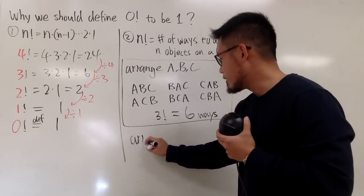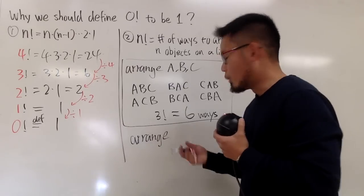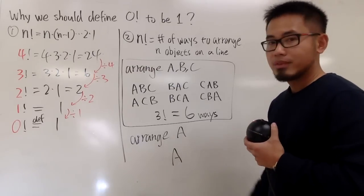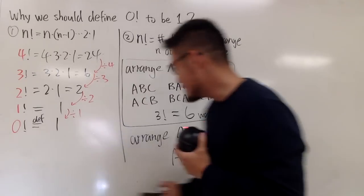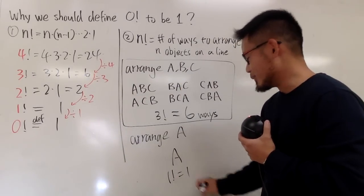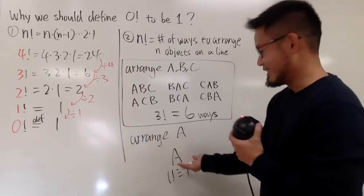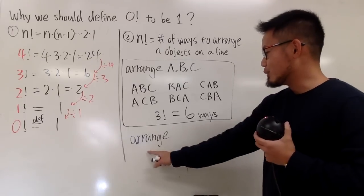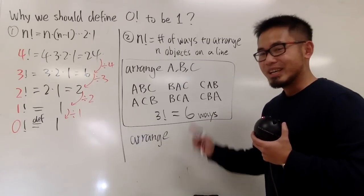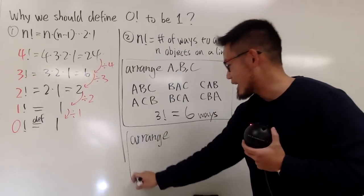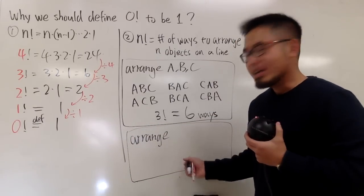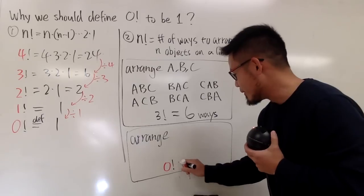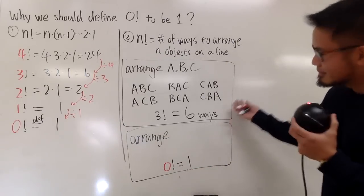What if I want to arrange just one thing — say, just A? The only way is to put down A, and that's all. That shows why 1 factorial has to be 1: you only have one configuration. Now, if you want to arrange nothing, the only way to do it is empty — you have nothing. You have one configuration, and that's nothing. So this shows why 0 factorial should be defined as 1.